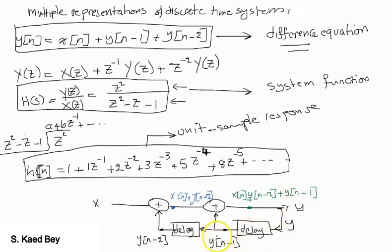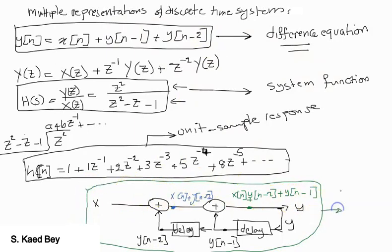So y(n-1) will be added at the later stage. So if you think about it, then y equals all of that, which represents the difference equation. All of this is what we call the block diagram representation.